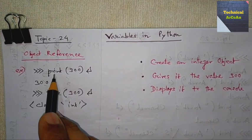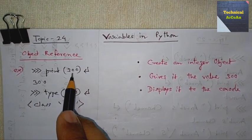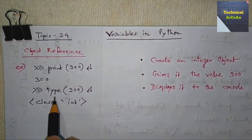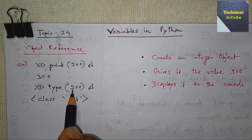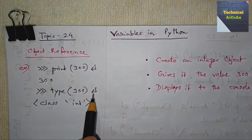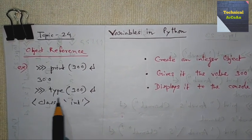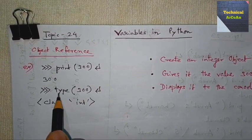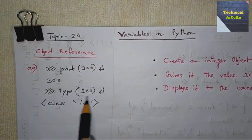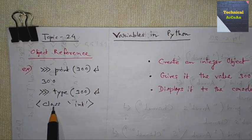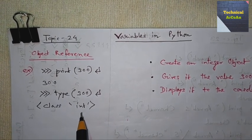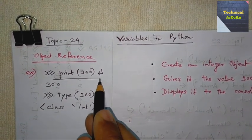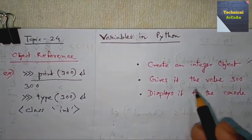For example, suppose we write print(300) — we get 300 as output. If we want to know the type of 300, we use the type() function: type(300) gives an output of class int. This means an integer literal in Python is an object.